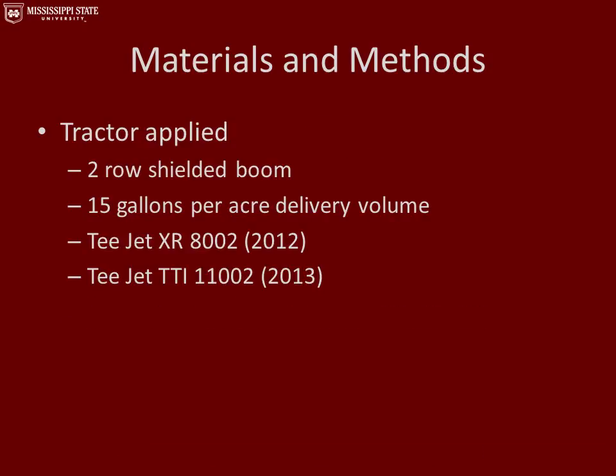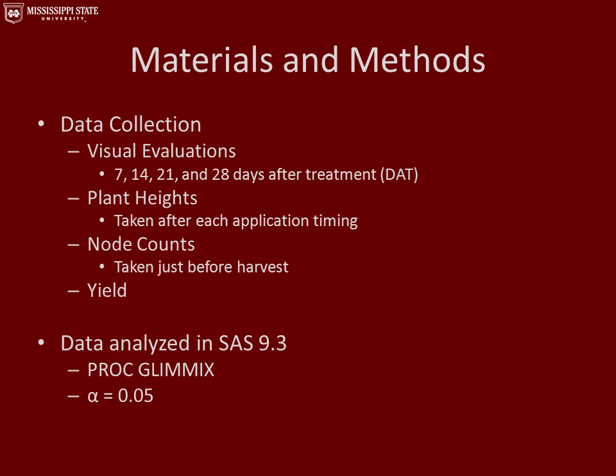All applications were tractor-applied using a two-row shielded boom with a 15 gallons per acre delivery volume. In 2012, we used T-Jet XR 8002 spray tips, and in 2013 we used T-Jet TTI 11002 spray tips. Data collected included visual evaluations at 7, 14, 21, and 28 days after treatments were made. Plant heights were collected after each application timing, node counts were collected just before harvest, and we also collected yield and determined yield reductions. Data were analyzed in SAS 9.3 under PROC GLIMMIX with a significance level of 0.05.